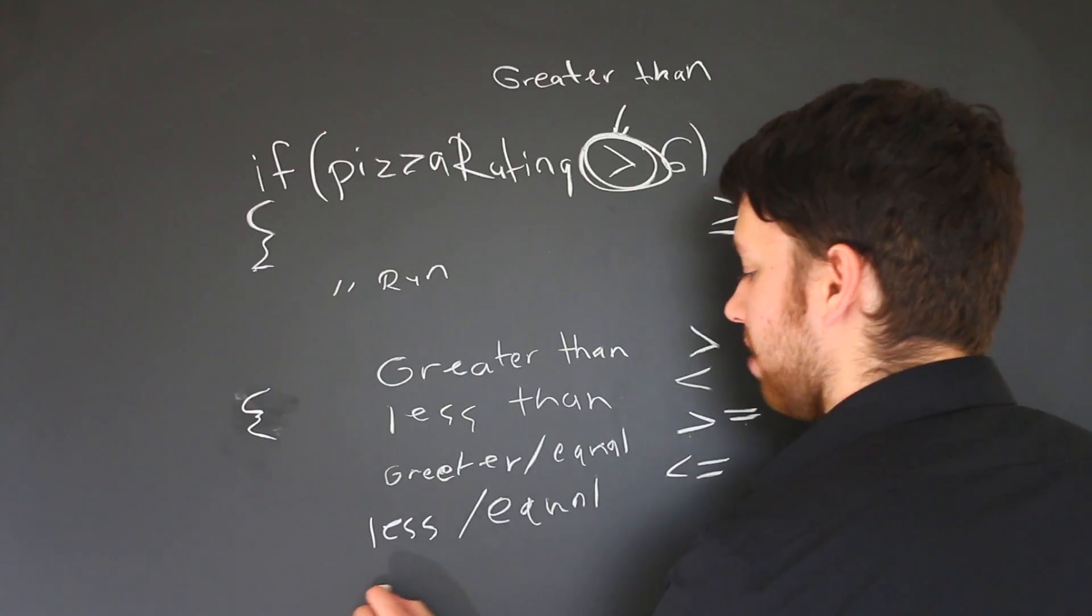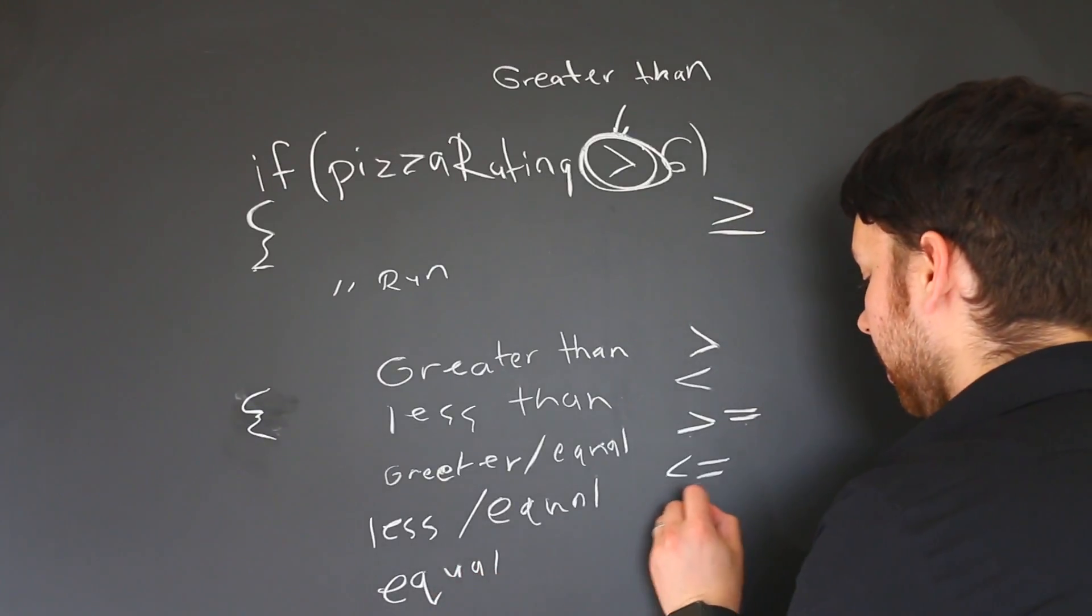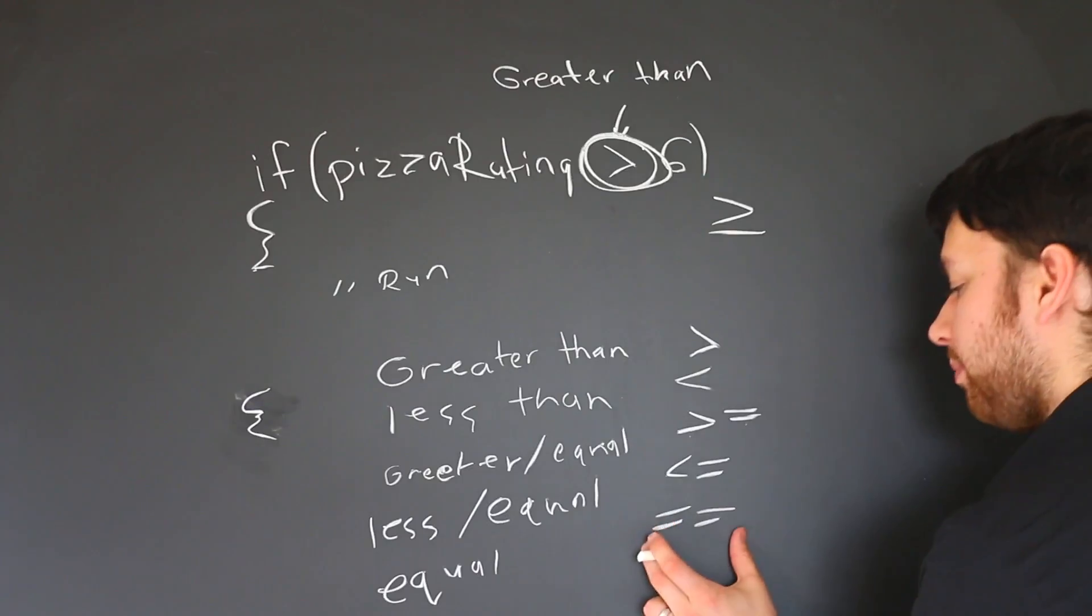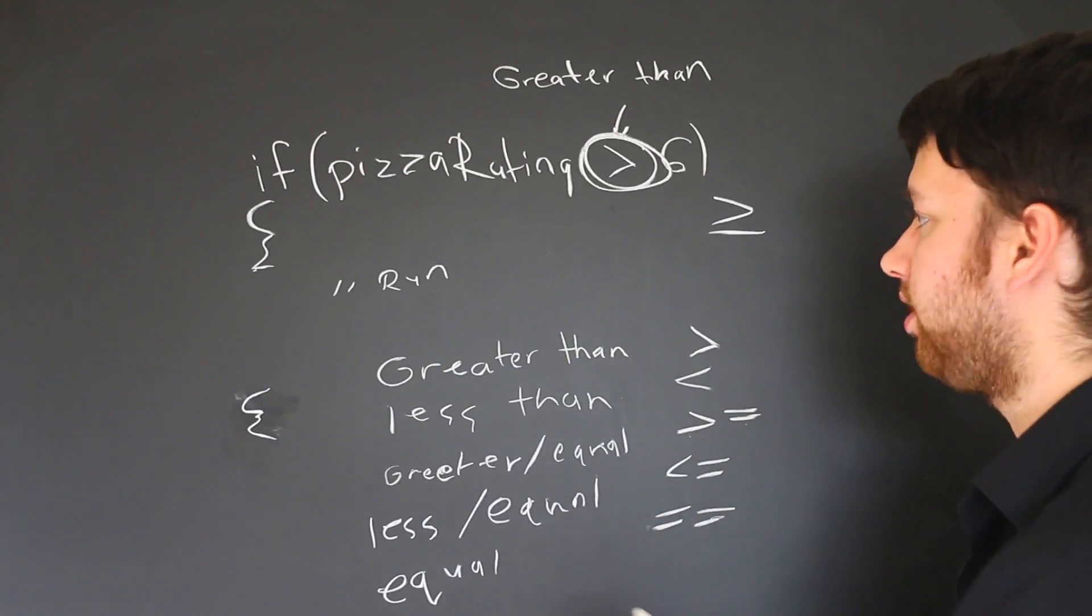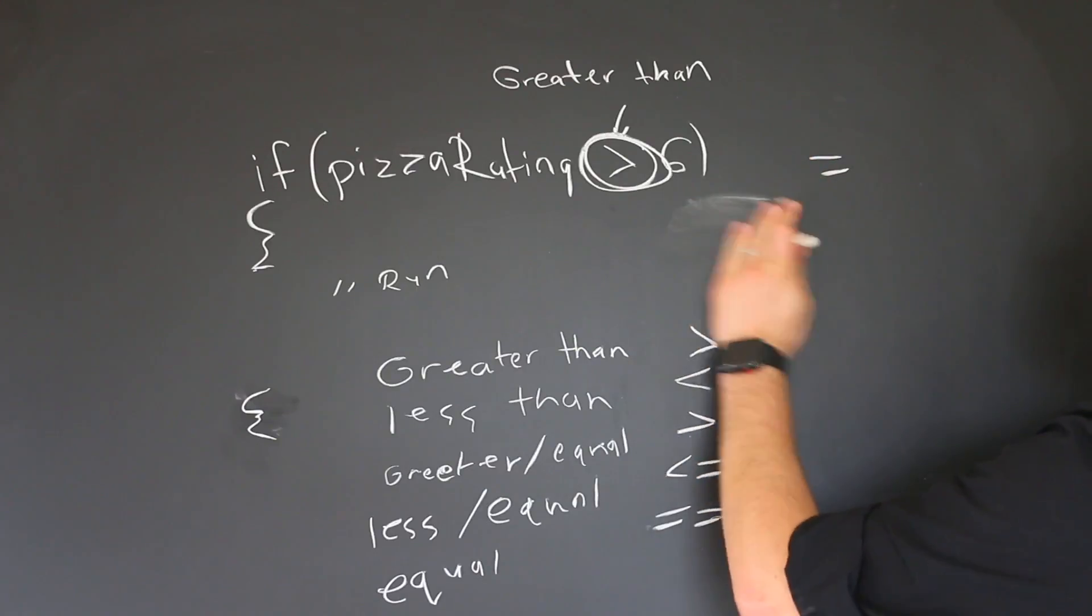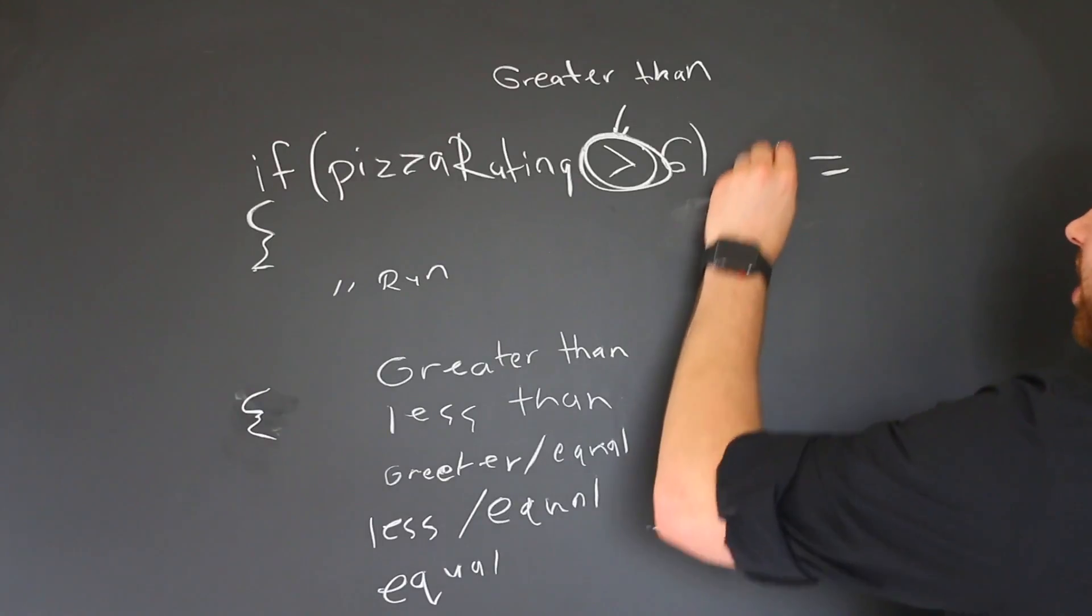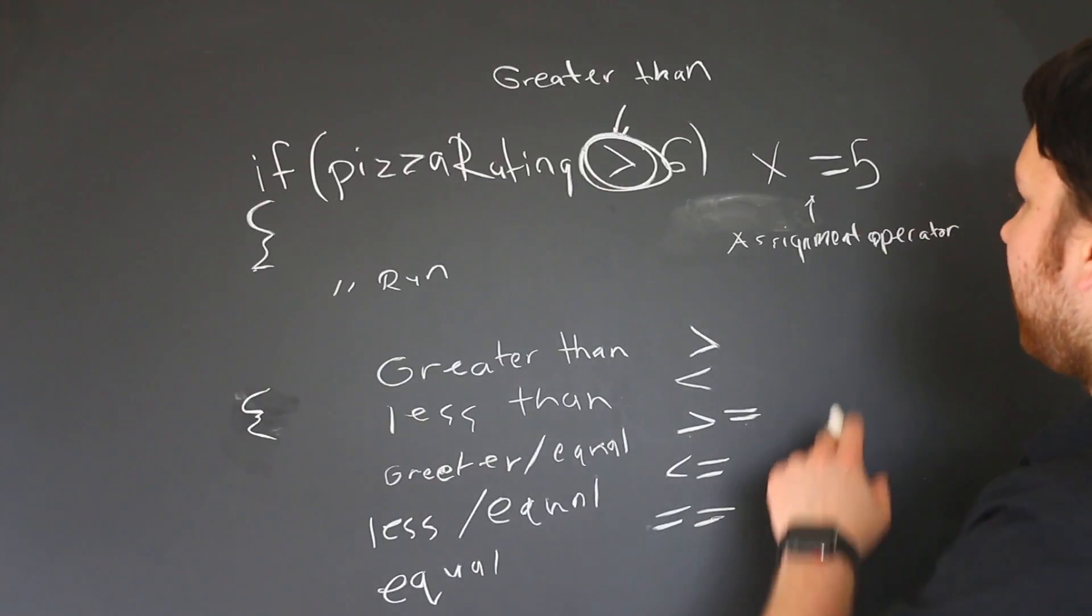The last one is whether or not something is equal to something, so that would not allow for greater than or less than. It has to be exactly the same number, and that is actually two equal signs. You have to remember that it's two, not one. The reason it's two is because if you think of what the individual equal sign is in C so far, this is used for assignment.